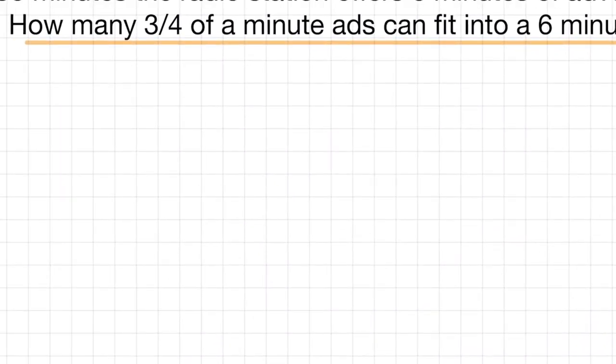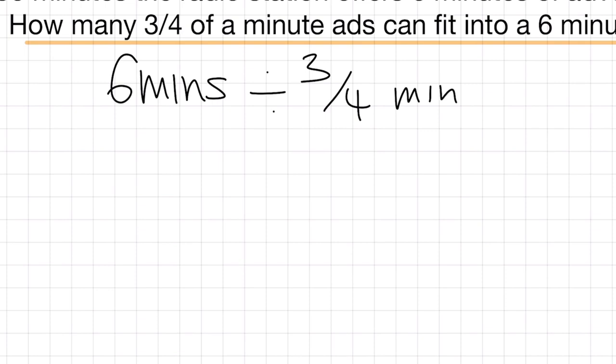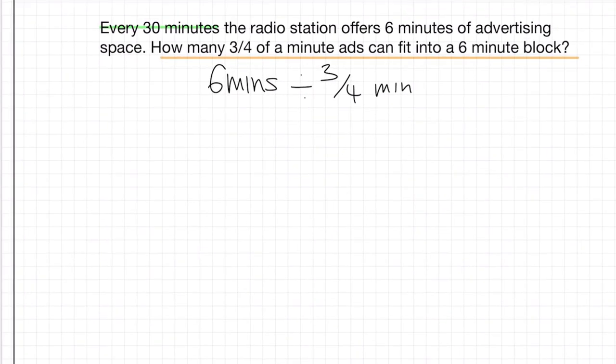Alright, first things first, let's put some data at the top here. We've got six minutes and we know that's our advertising space. And we're going to need to divide that by three quarters of one minute. Okay, so let's look at how we can approach this.